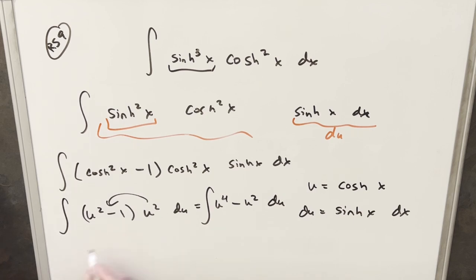That's just power rule, right? So that's going to be u to the five over five minus u cubed over three.